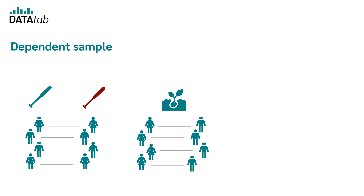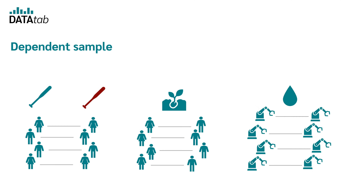Further, it doesn't even have to be about people. You could also investigate whether a lubricant has an influence on the downtime of machines. Then you would have measured values from the machines with the old and then again with the new lubricant, which would also be available in pairs.